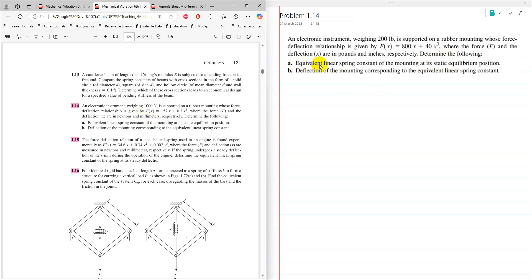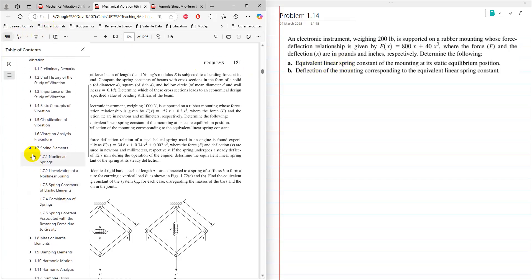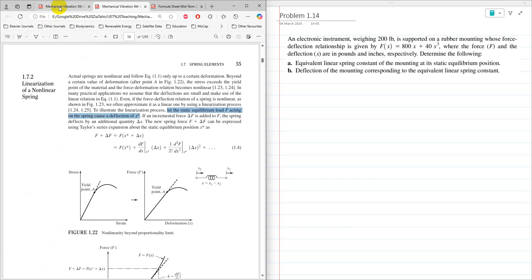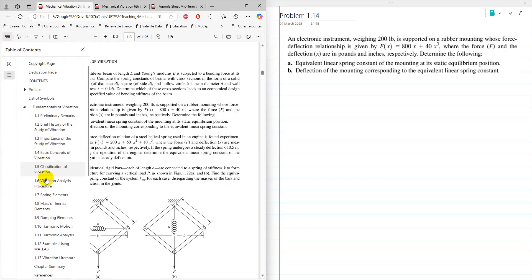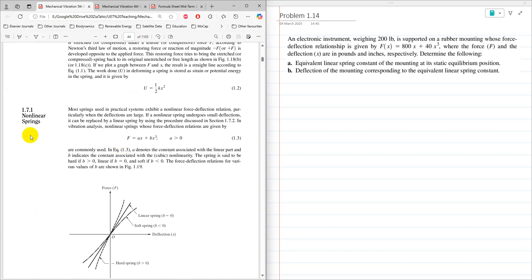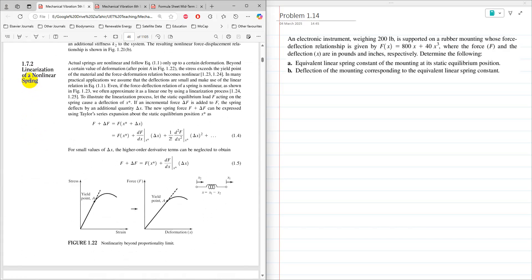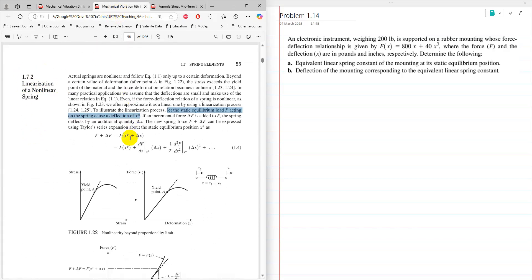Determine the following: equivalent linear spring constant of the mounting. To find equivalent spring constant of the mounting, refer to the spring element topic 1.7. It is 1.7.2, linearization of a non-linear spring. In 5th edition that is in the spring elements and for non-linear springs, again it is 1.7.2 linearization of a non-linear spring.